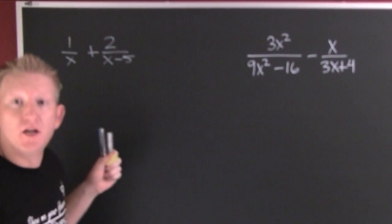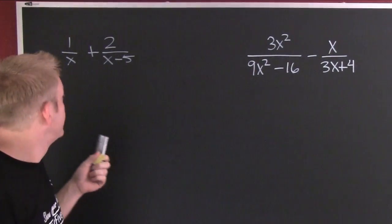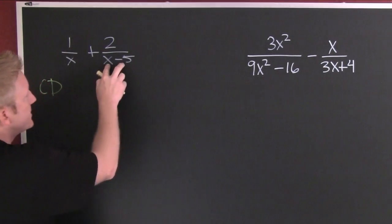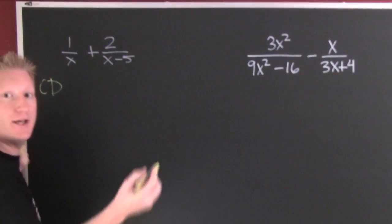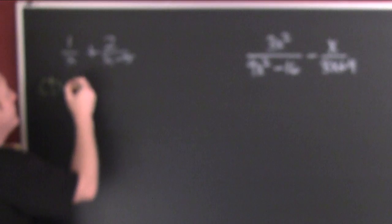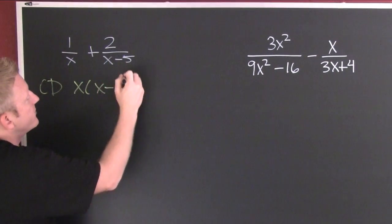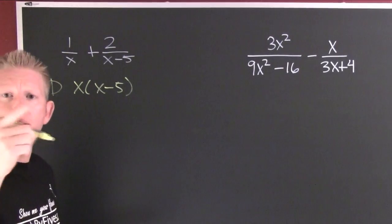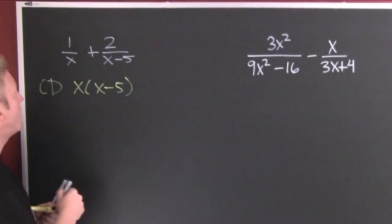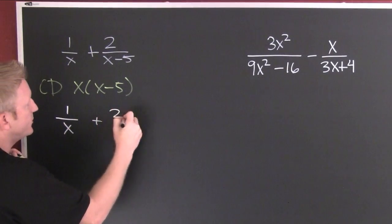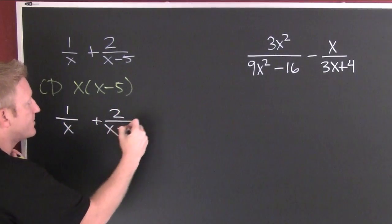And what would a common denominator be if we had one? You might think it's just x but it's not. This is an entire factor of our common denominator. So our common denominator is going to be x times x minus 5. So let's take the original problem: 1 over x plus 2 over x minus 5.